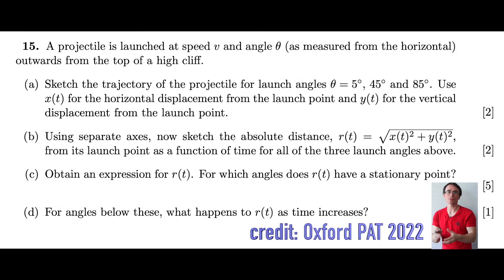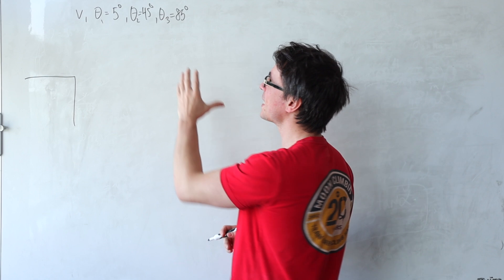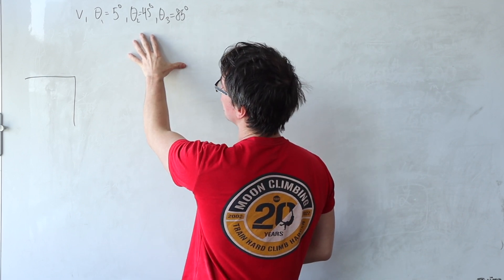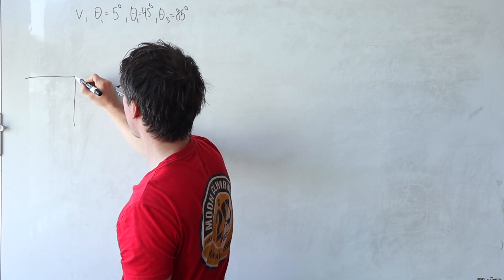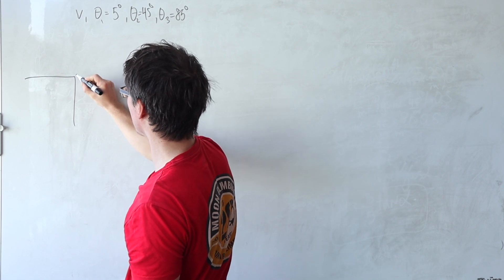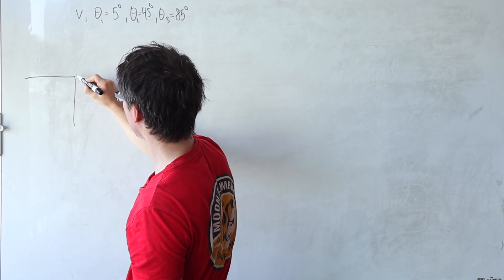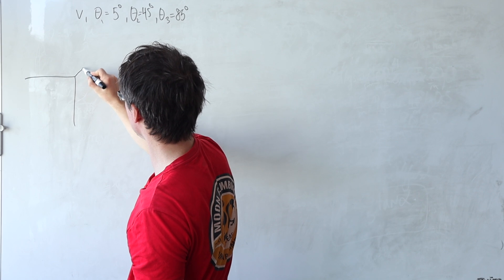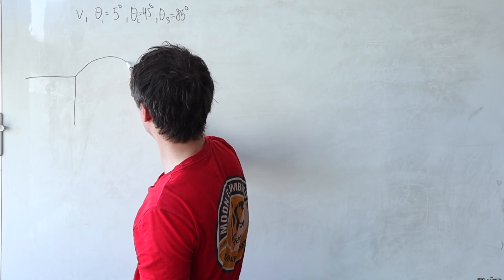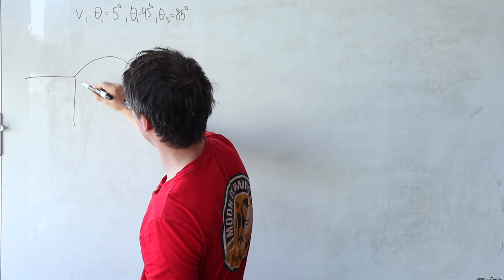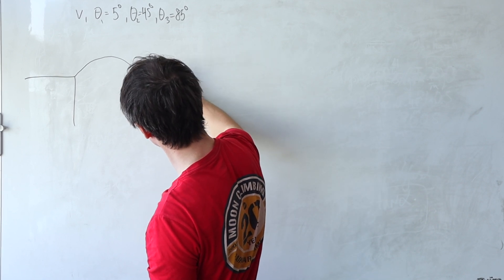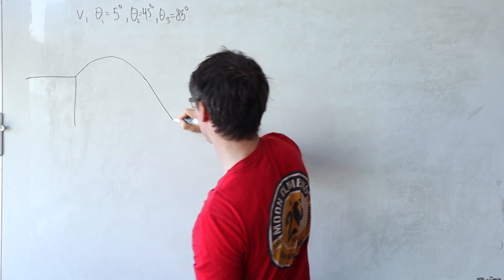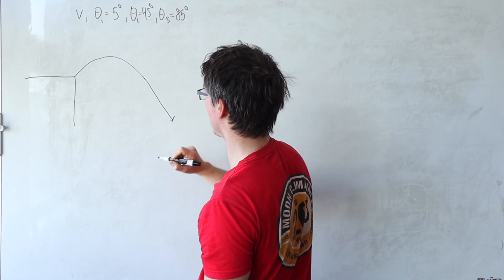The first part of the problem is to simply sketch the trajectories. The longest horizontal range is going to be for 45 degrees, and in this case the horizontal range is going to be much bigger than the actual height, so it will look something like this, and then the projectile will just carry on.